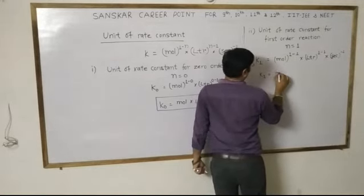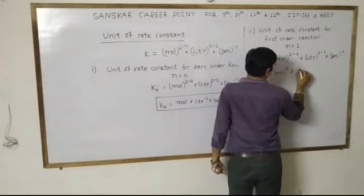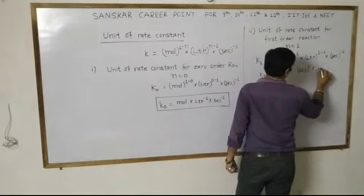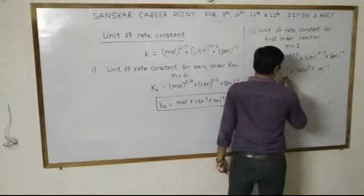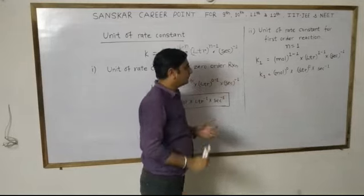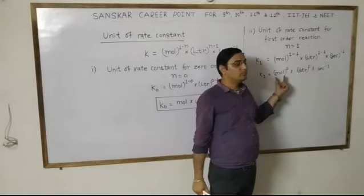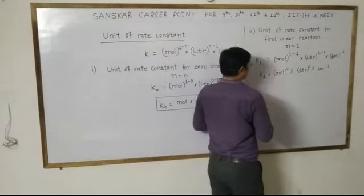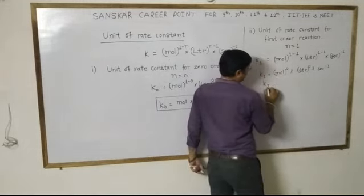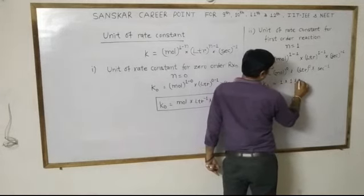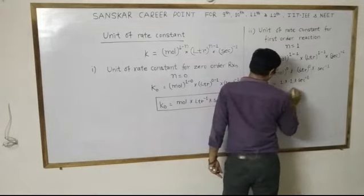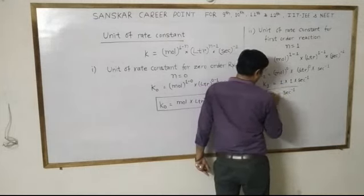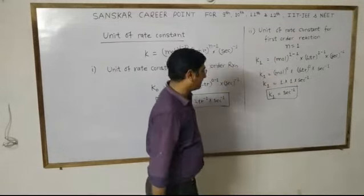K₁ equals mole to the power 0, liter to the power 0, second to the power minus 1. Since anything to the power 0 equals 1, K₁ equals 1 times 1 times second to the power minus 1. Therefore, K₁ equals second inverse (s⁻¹).